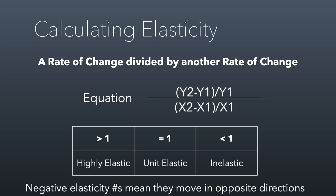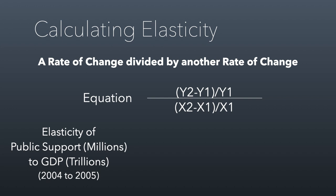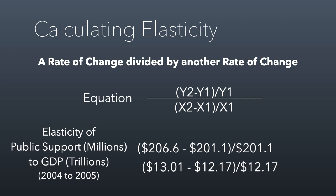Negative elasticity numbers mean that they move in opposite directions. So if you have an elasticity of negative 1, as the economy grows 3%, your revenue declines by 3%. We could take the March of Dimes numbers and calculate elasticity for 2004 to 2005. On the top we have public support in millions of dollars, and on the bottom we have GDP in trillions of dollars. It's okay to use different units as long as I'm using the same units consistently on top and on bottom. The point is I'm tracking a rate of change for public support versus GDP for that year, and what that tells me is the measure was 0.399.